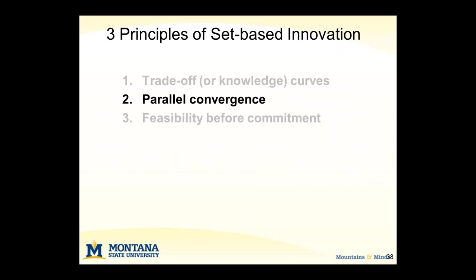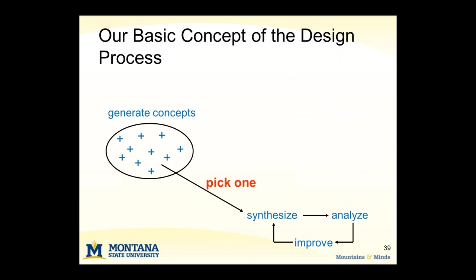The second principle of set-based innovation is what I've called parallel convergence. To explain this concept, I'll go back to the conventional way of thinking about the design process — basically an iterative mindset as opposed to a convergent mindset. In this case, we generate lots of ideas, evaluate them in a preliminary way, choose what we think is the best alternative, work on it, add detail, analyze it, and iterate until we've met our design requirements.